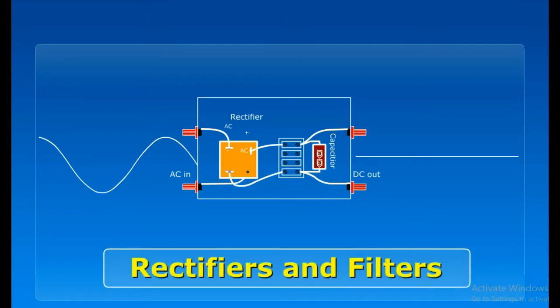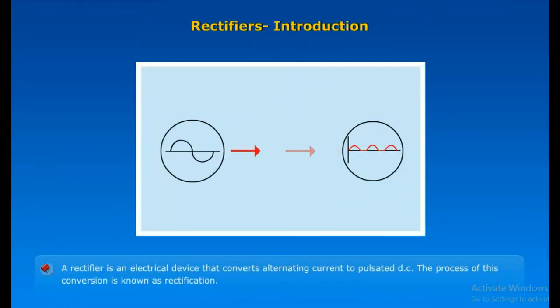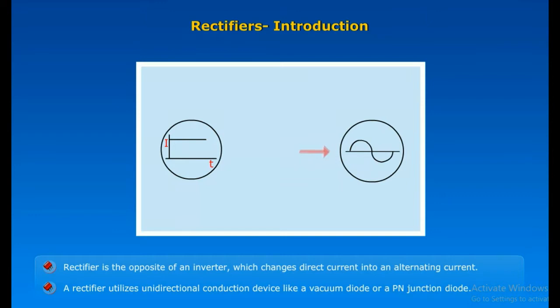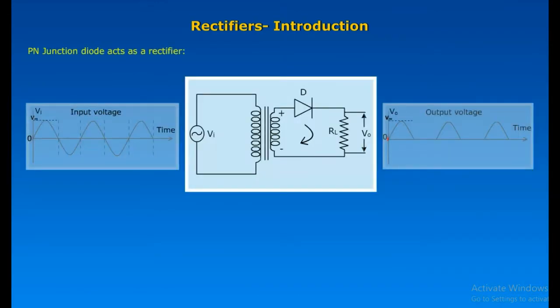Rectifiers and Filters. A rectifier is an electrical device that converts alternating current to pulsated DC. The process of this conversion is known as rectification. A rectifier is the opposite of an inverter, which changes direct current into alternating current. A rectifier utilizes a unidirectional conduction device like a vacuum diode or a P-N junction diode. A P-N junction diode acts as a rectifier.